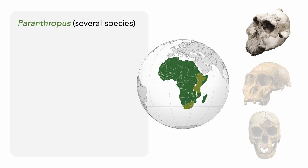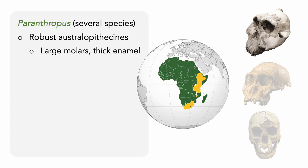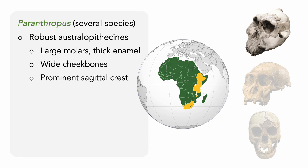Paranthropus, or the robust Australopithecines, had large molars with thick enamel, and their faces appeared wide and dish-shaped because of their powerful jaw muscles, wide cheekbones, and prominent sagittal crest — a ridge at the top of the skull running along the centerline, acting as a point of attachment for powerful jaw muscles. While they were certainly adapted for tough foods like roots and nuts, Paranthropus likely had a more generalist diet, and some are known to use unmodified bones as tools to cut or process plants, or to extract protein-rich termites for food. These bone tools were carefully hand-selected and would become smooth and polished after repeated use.